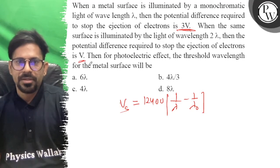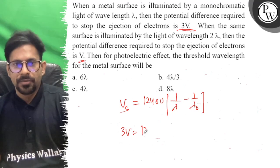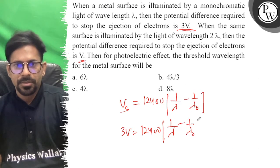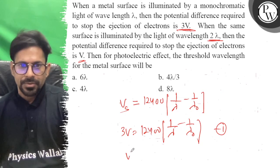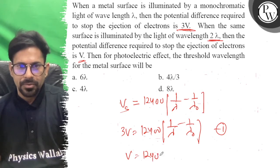Second case is V. 3V is nothing but 1240 (1 by lambda minus 1 by lambda 0). If we use 2 lambda, then V is equal to 1240 (1 by 2 lambda minus 1 by lambda 0).